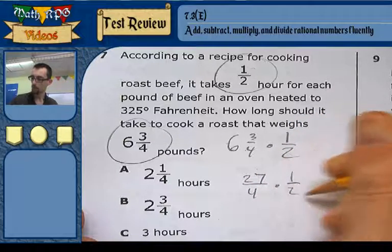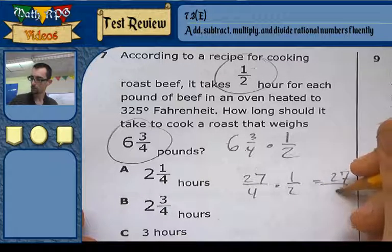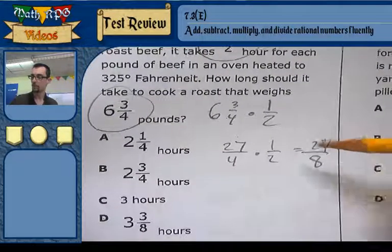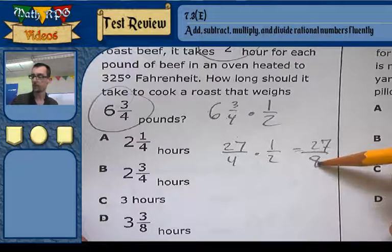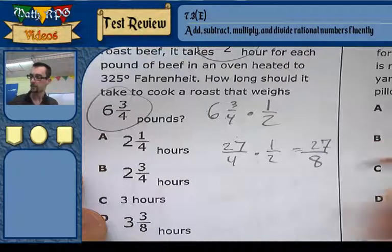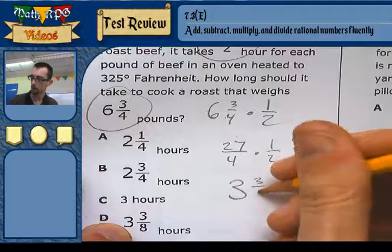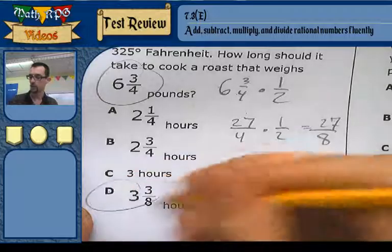And now I'm going to multiply straight across. 27 times 1 is 27, 4 times 2 is 8. And I can turn this back into a mixed number by dividing 8 into 27. 8 times 3 is 24, so that leaves me with 27 minus 24 is 3 eighths hours, choice D.